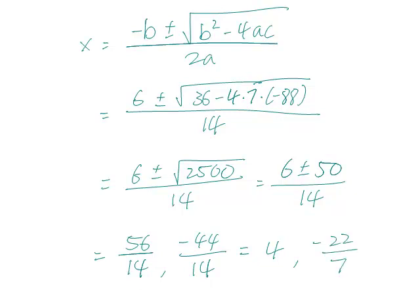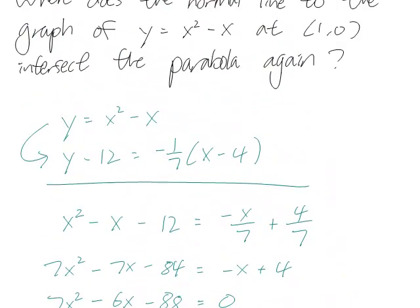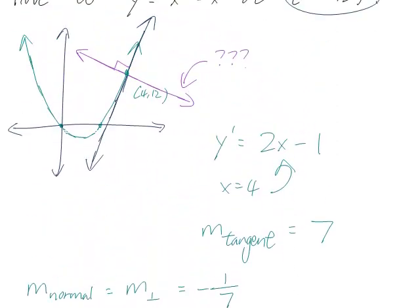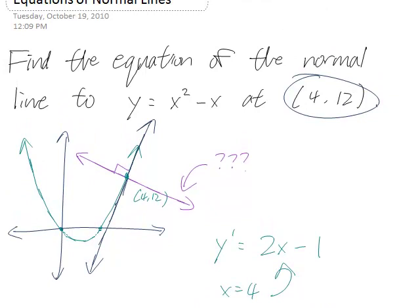And so, x equals negative 22 over 7, which is a little bit over negative 3, or a little bit below negative 3, I should say. So, somewhere on the left here is where this normal line and this parabola will intersect again.